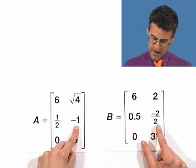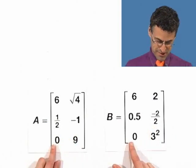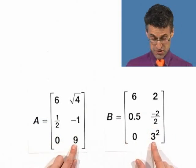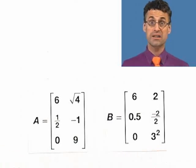Negative 1, and how about negative 2 over 2? Negative 2 over 2 is just negative 1. What's going on here? 0 equals 0, and does 9 equal 3 squared? Sure does. So in fact, these are examples of two matrices that are actually equal. These are equal matrices.